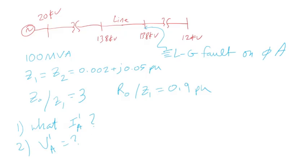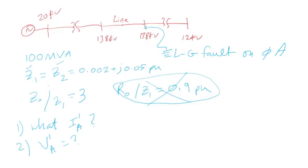Looking at this system, you might be given some information that is really just a distraction. For instance, the zero sequence resistance ratio — you would need that if you are calculating the effective grounding ratio, but for calculating the fault current, you need the positive sequence impedance, which is given, and the negative sequence impedance, which is given as a ratio, so you can calculate that. The pre-fault voltage is 1.05 per unit. That's all you need to calculate the fault current.